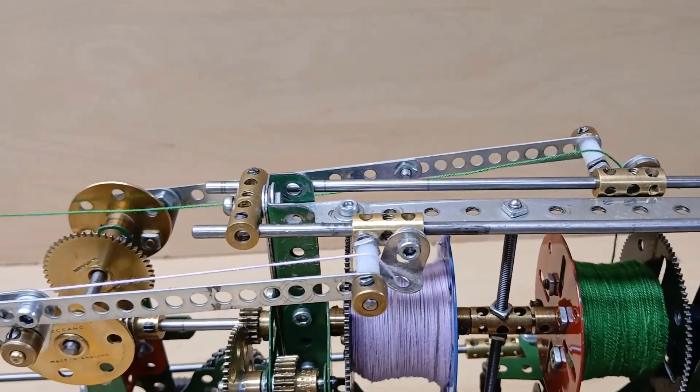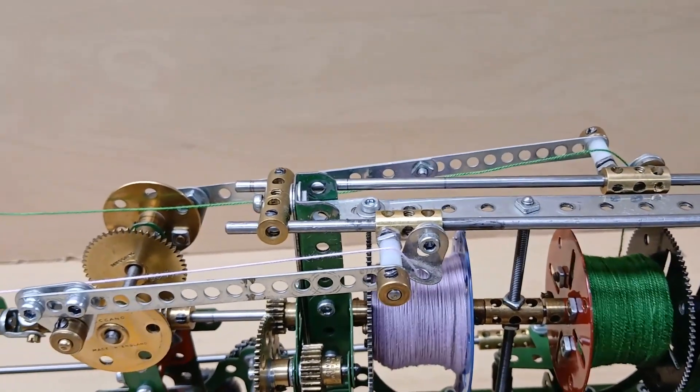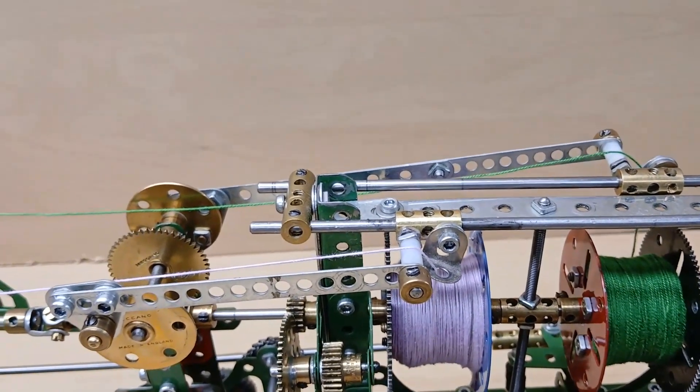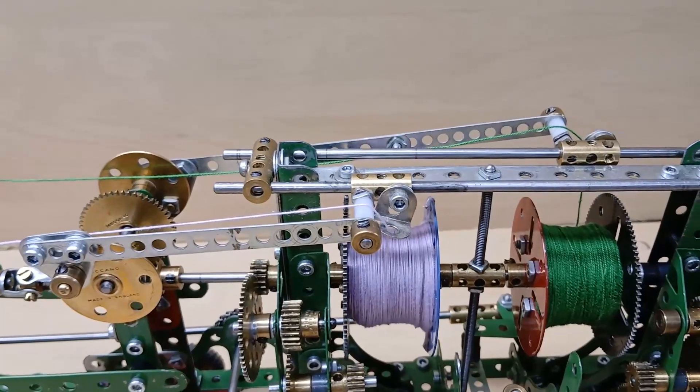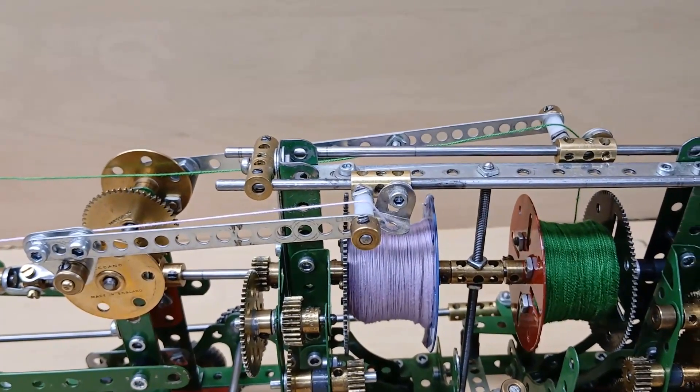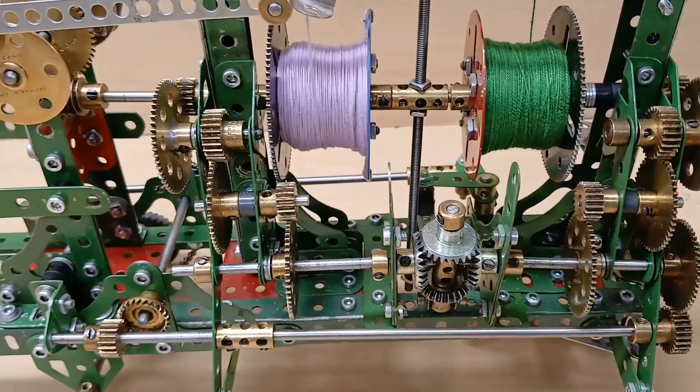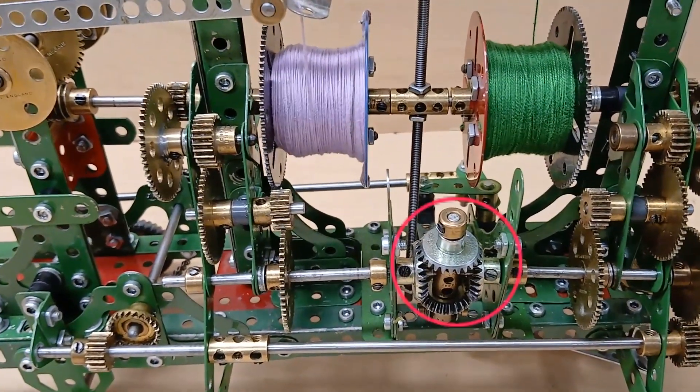Here there is a mechanism to guide the wires onto the drums when the drums are being loaded with wire. And when we run the torpedo, these are disabled just to save energy. The steering is controlled by this differential gear.